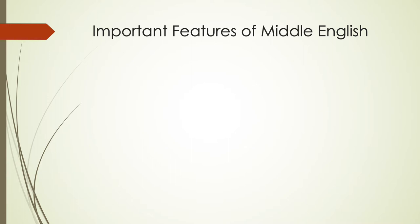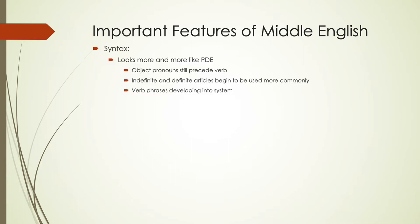Starting with syntax, it is starting to look more and more like present-day English during this time period. We do still see some vestiges of Old English, so there are still object pronouns before the verb. But we start seeing indefinite and definite articles begin to be used more commonly, something that we didn't really see in Old English. And verb phrases are developing into a system that wasn't really featured in Old English either.